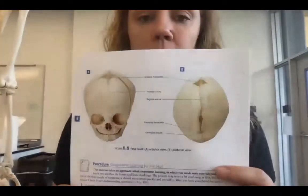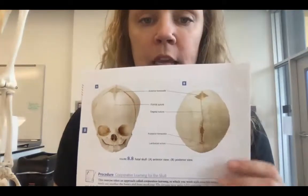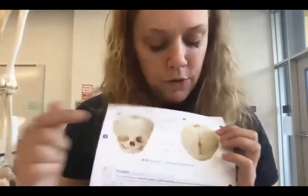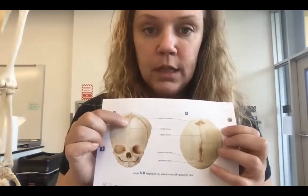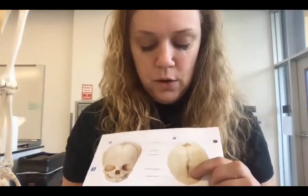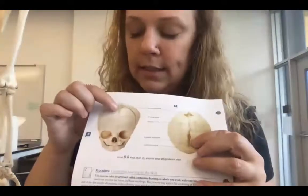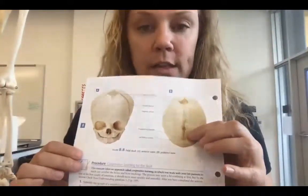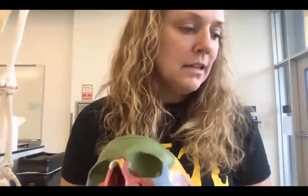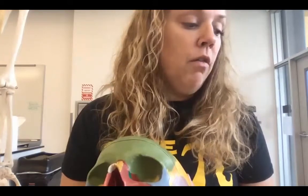The fontanelles are the technical term for soft spots. The one in the front is called the anterior fontanelle, and the one towards the back is the posterior fontanelle. You can see these on figure 8.8. Until they're completely ossified, you have to be careful with those areas.